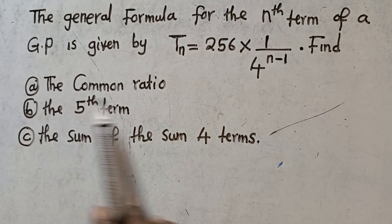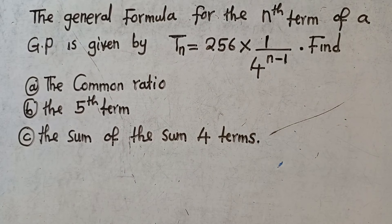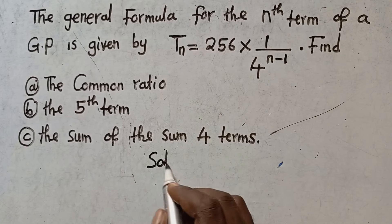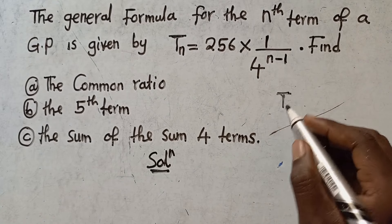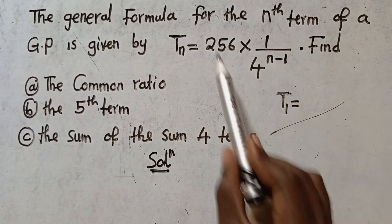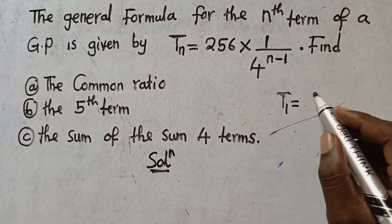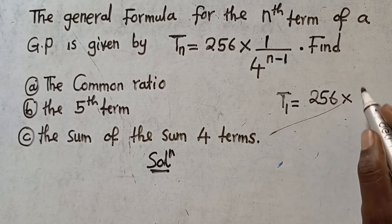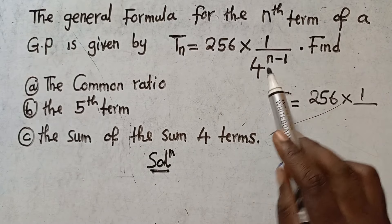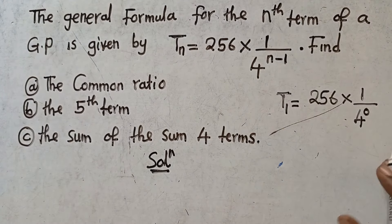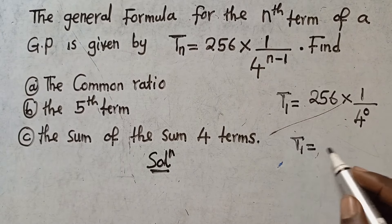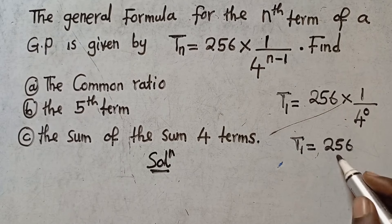Our first question asks us to find the common ratio. To find the common ratio, we need two terms — the first term and the second term — then divide the second term by the first term. To find the first term, wherever there is n in the formula, I substitute 1. So I get 256 multiplied by one over four to the power of one minus one, which is four to the power zero.